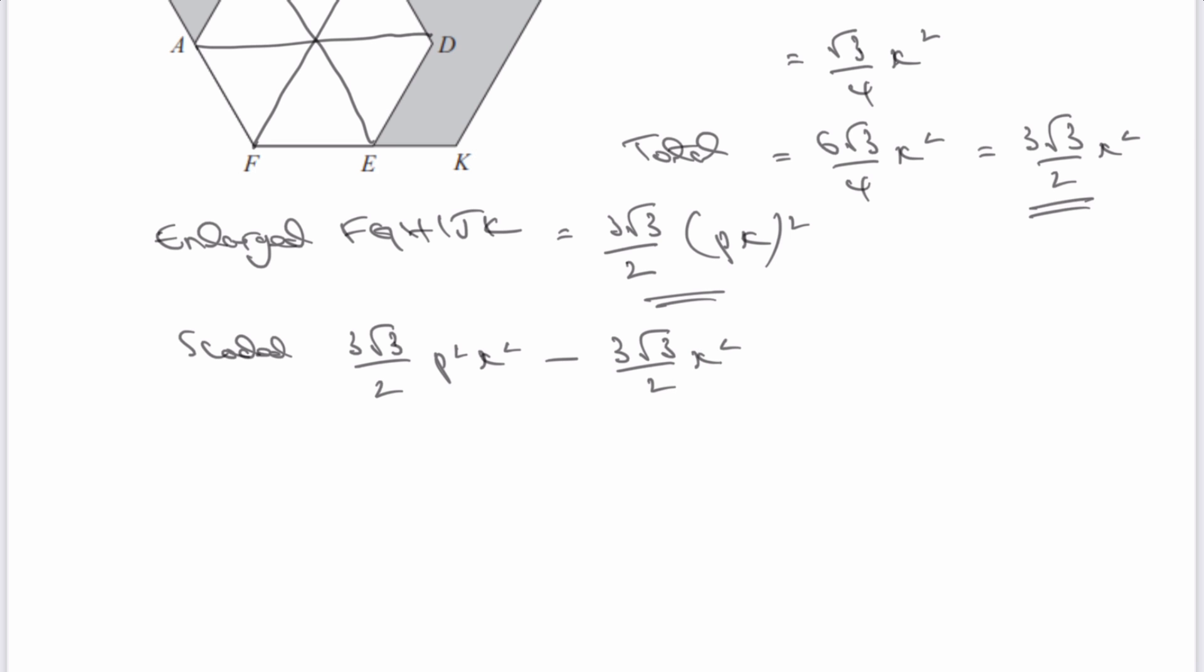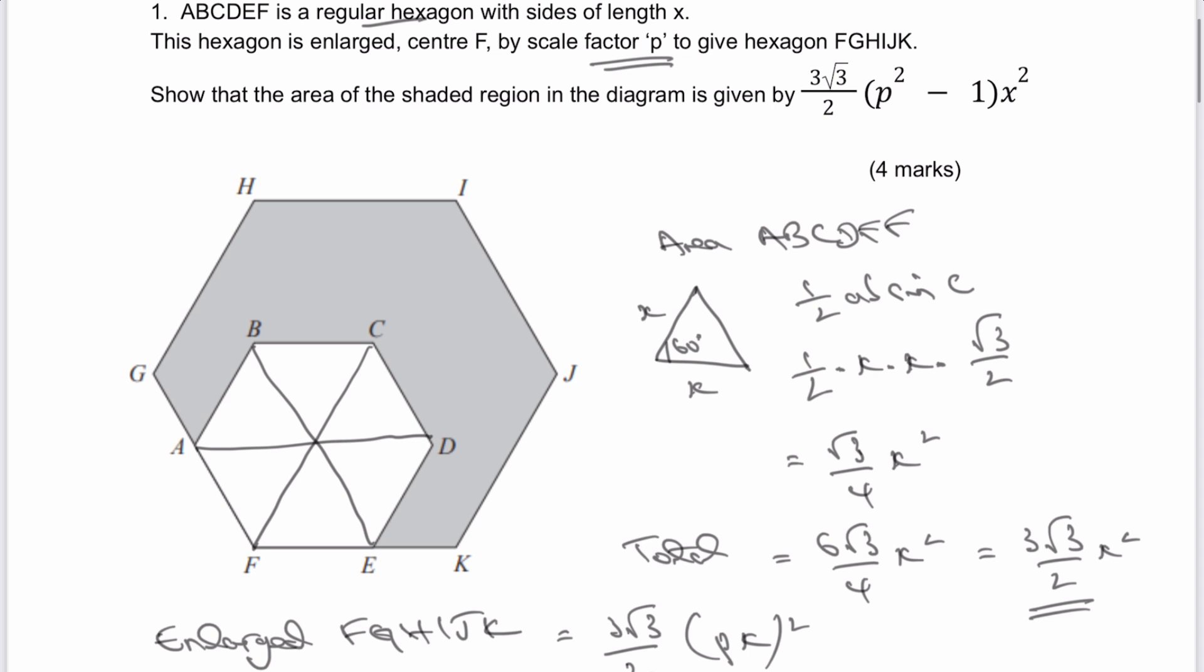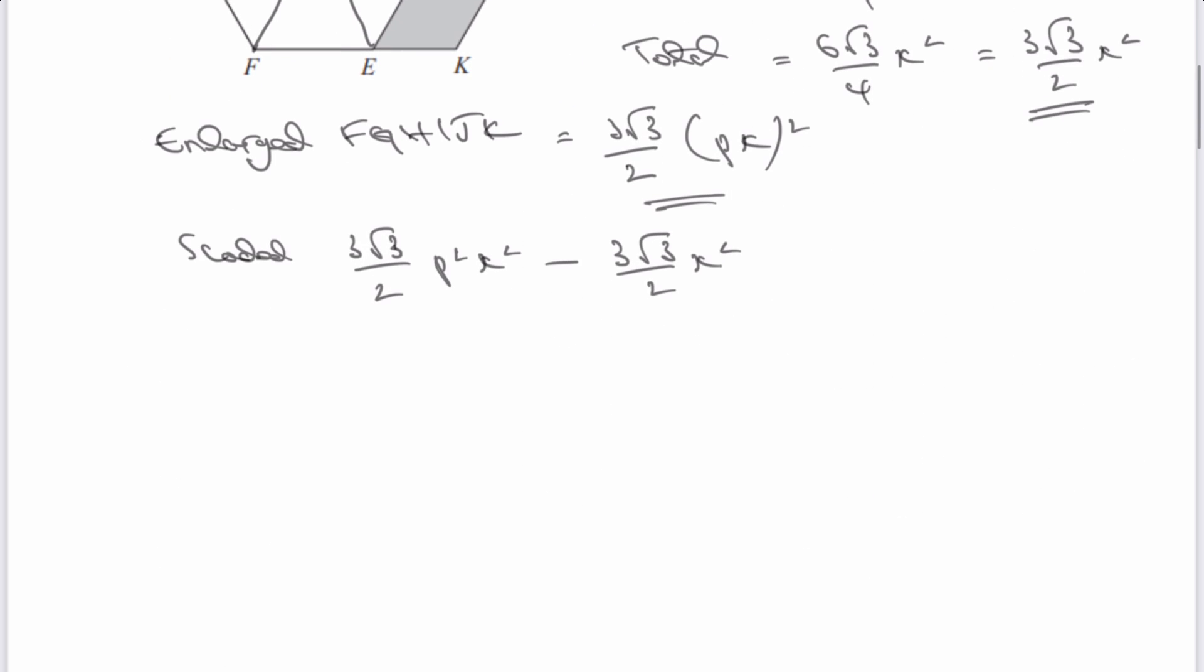And then if we look back at the question, what we need to do is show that it's given by that. So effectively we're going to factorize. So if we look at our shaded region here, if we factorize for 3 root 3 over 2 X squared,